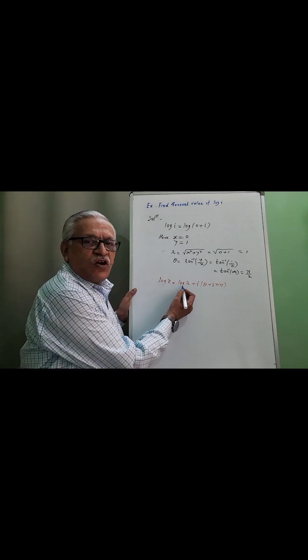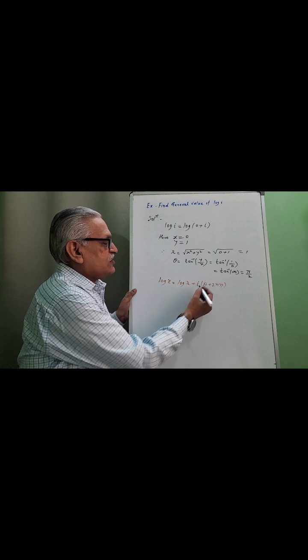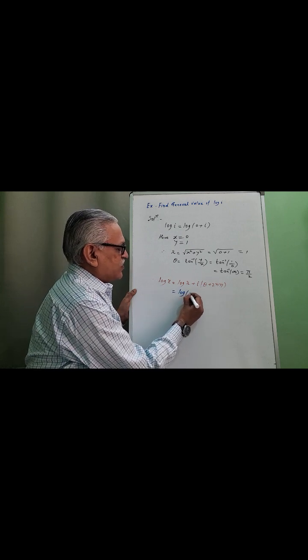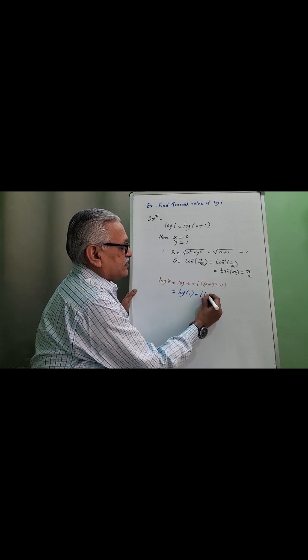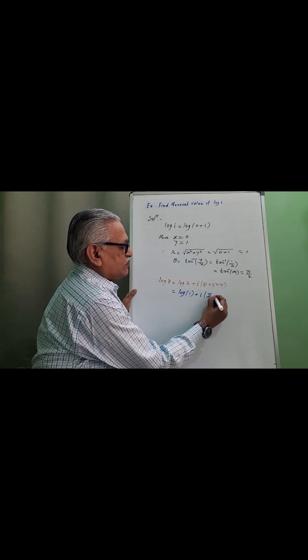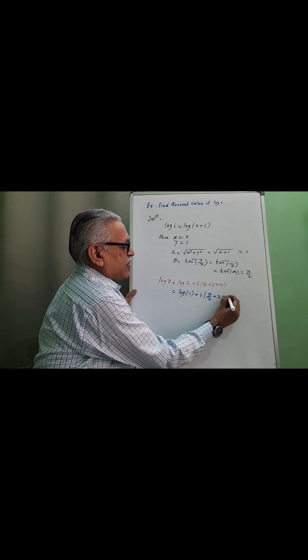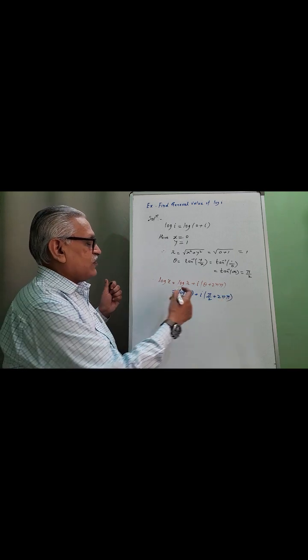log z is equal to log r plus i into (theta plus 2nπ). Log of r, r is 1, plus i times theta, π by 2 plus 2nπ. Value of log 1 is 0.